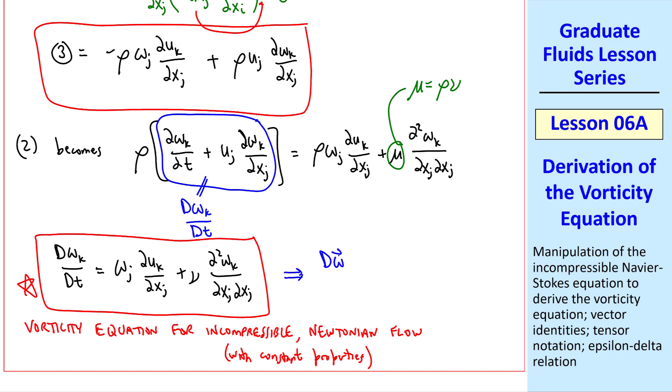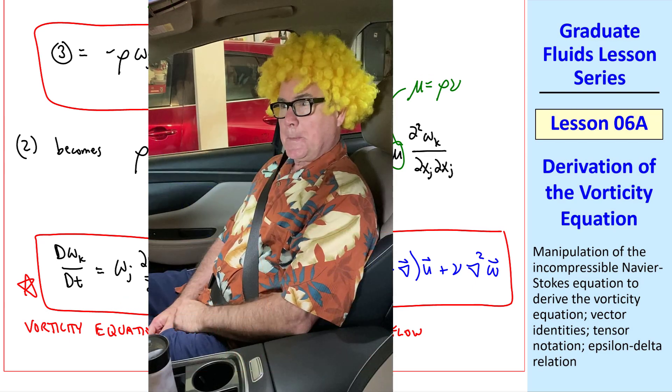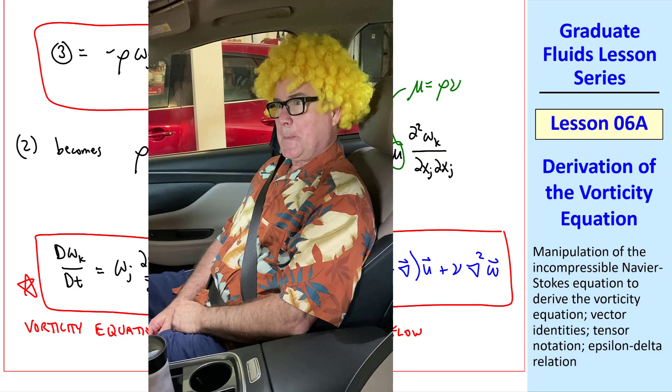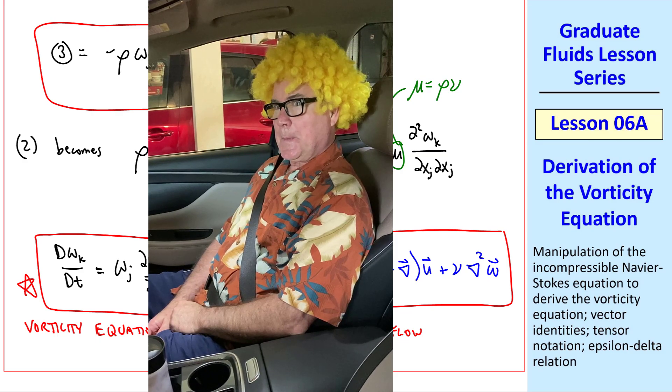We end up with d omega k dt equal omega j del u k del xj plus nu del squared omega k del xj del xj. This is finally the vorticity equation for incompressible Newtonian flow with constant properties. If you prefer vector notation, d omega dt is omega dot del operating on u plus nu times the Laplacian of omega. We'll talk about the significance of each of these terms and of the whole equation in the next lessons. You can unbuckle your seatbelt now, Boris.